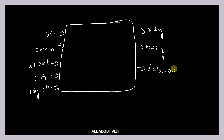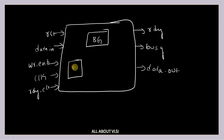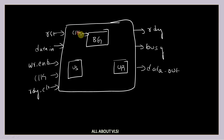So these are my inputs and outputs of my UART top module. Inside this I am going to have different modules like baud rate generator (BG), UART sender (US), and UART receiver (UR). This BG is connected with our clock and write enable.